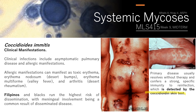In symptomatic patients, common symptoms include fever, respiratory distress, calf pain, anorexia, headache, and myalgia, which can manifest for six weeks or longer. The disease may then progress to secondary infections including nodules or cavities in the lungs and progressive pulmonary disease.